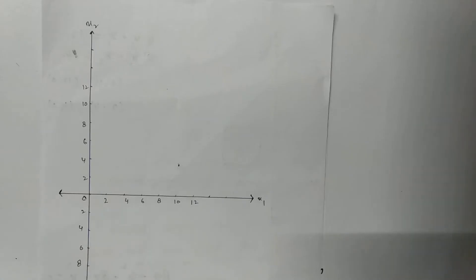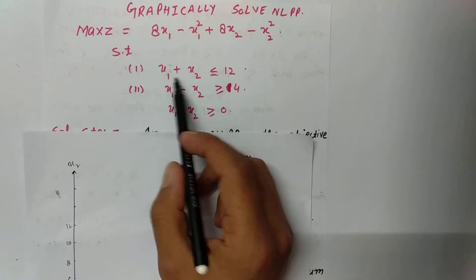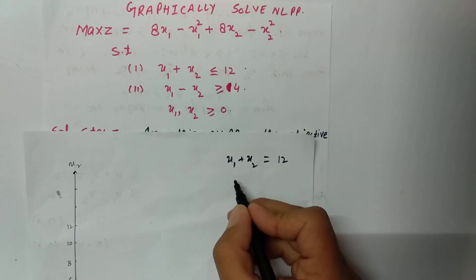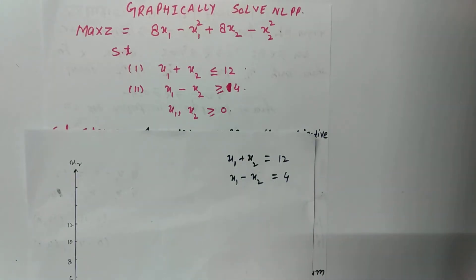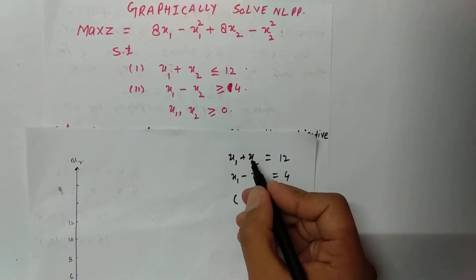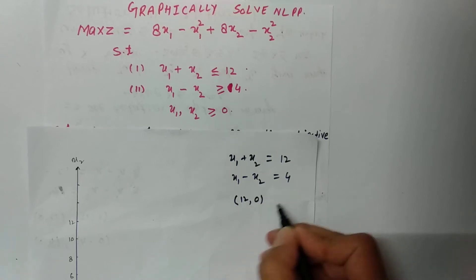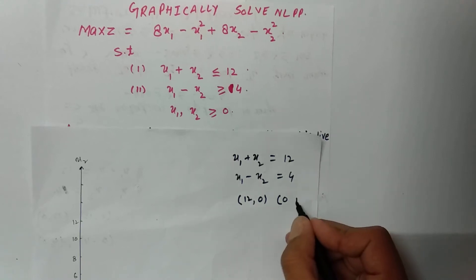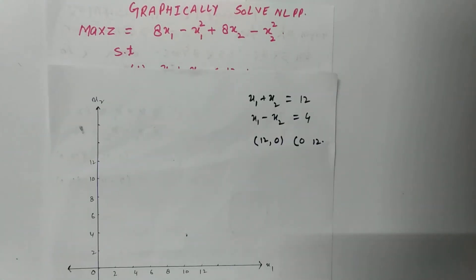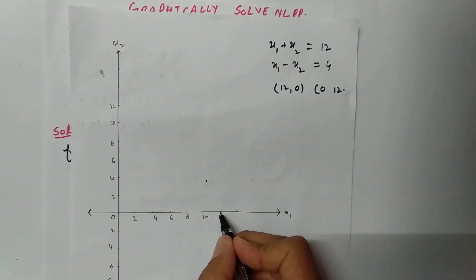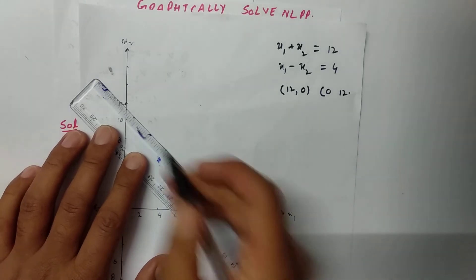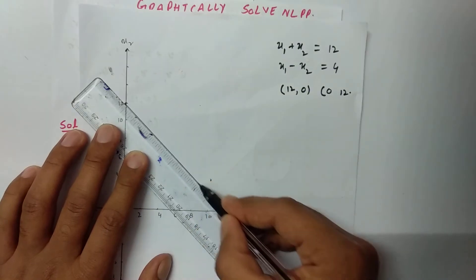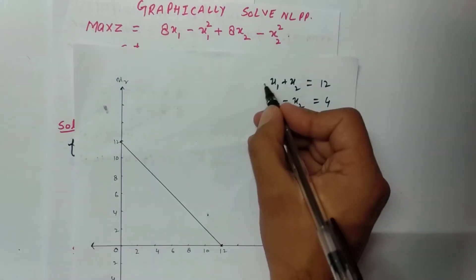Here is the graph: the x-axis is denoted by x1 and the y-axis is denoted by x2. I will write the constraints as equality constraints: x1 + x2 = 12 and x1 − x2 = 4. For the first line, when x2 = 0, x1 = 12, giving point (12, 0); and when x1 = 0, x2 = 12, giving point (0, 12). I will join these points on the graph. Let us call this line number one.